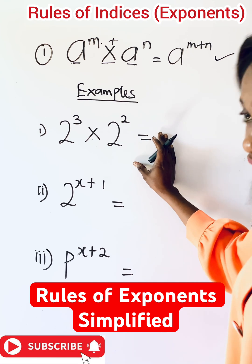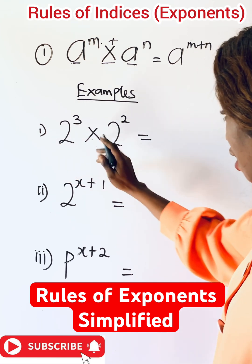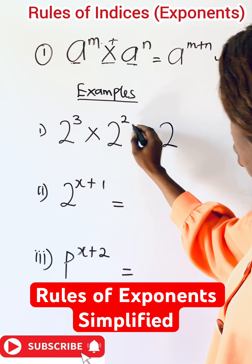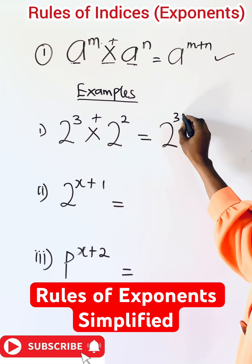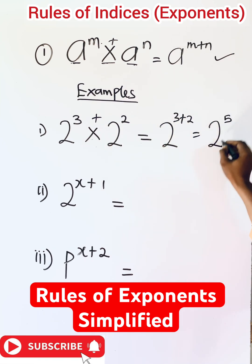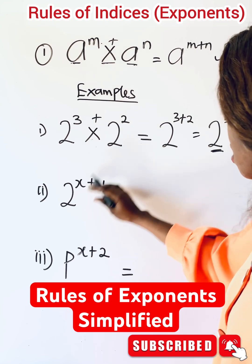Now let's answer this. What do you do here? Just pick one base, two, then add the power. So you have three plus two. We have two raised to power of five.